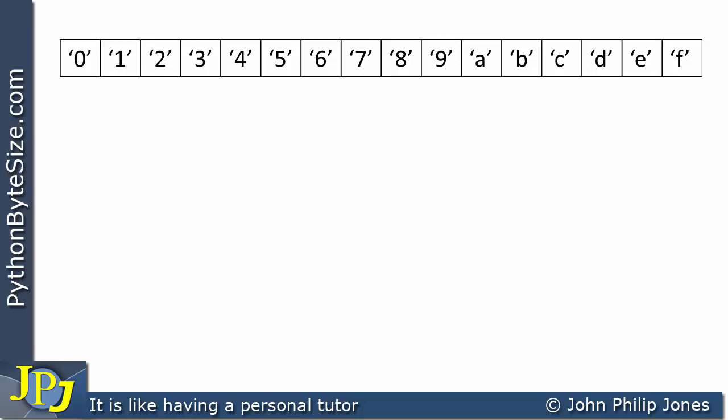What we need to do is generate a string for the hexadecimal code that's going to represent the color. The first symbol we need is the hash symbol — called the hash symbol in British English, and the pound symbol by Americans. Having got this in place, we now need to, at random, choose one of the elements in the list. I'm going to show that being the element F — the string of length 1 that contains F — chosen at random, and we're going to add that to the string that's going to be built up.